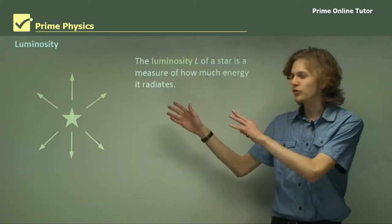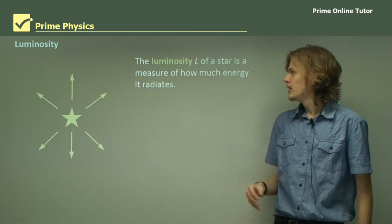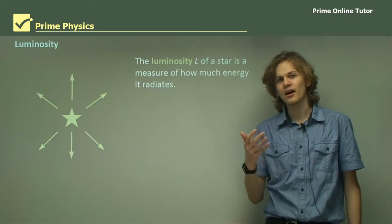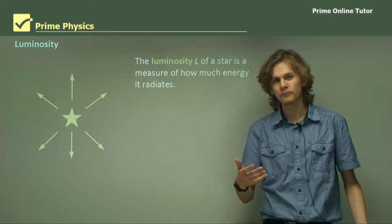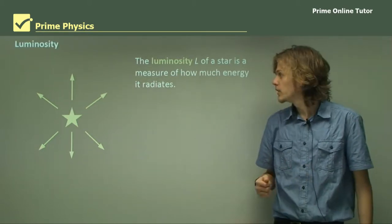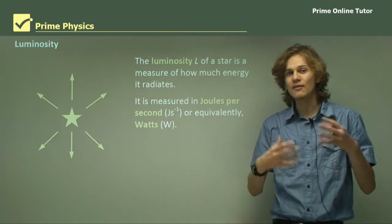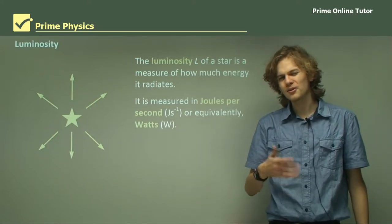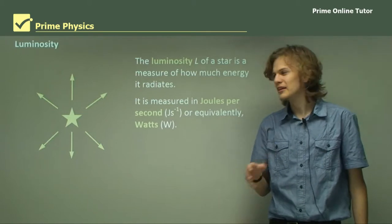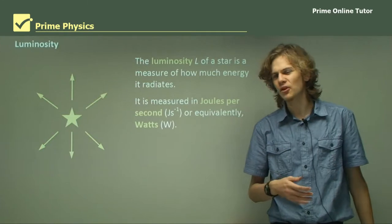Let's start with the definition of terms, beginning with luminosity. The luminosity of a star, represented by capital L, is a measure of how much energy it radiates in all directions. It's measured in joules per second, or equivalently, watts. One watt equals one joule per second.